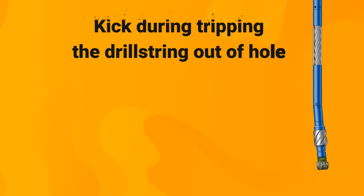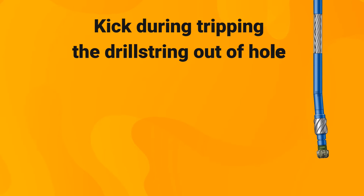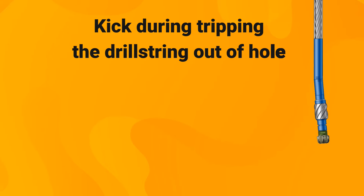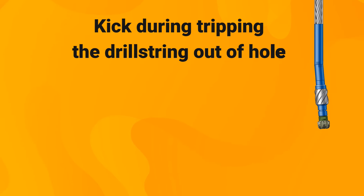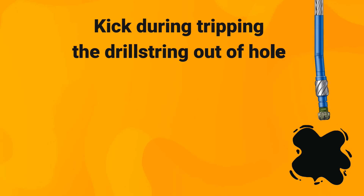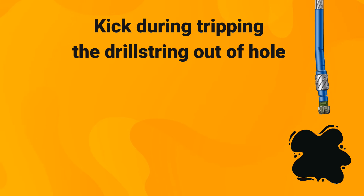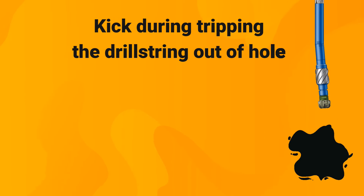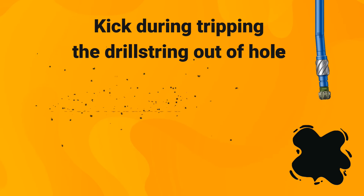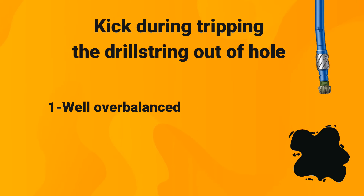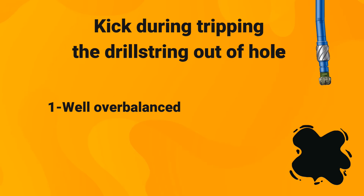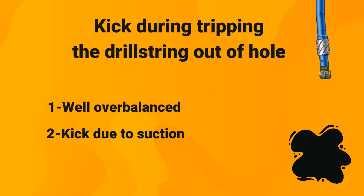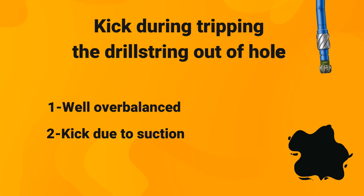Finally, there is another type of kick that may occur during tripping the drill string out of the hole — this is called a swab kick. Imagine withdrawing medicine out of a vial using a syringe. This is exactly what happens when you pull out of a hole at high speed. The vial is the formation, the medicine is the formation fluids, and the syringe is the drill string. In this type of kick, the well may still be overbalanced depending on the size of the kick — it didn't occur because of a loss in overbalance, but due to the suction effect of the drill string.